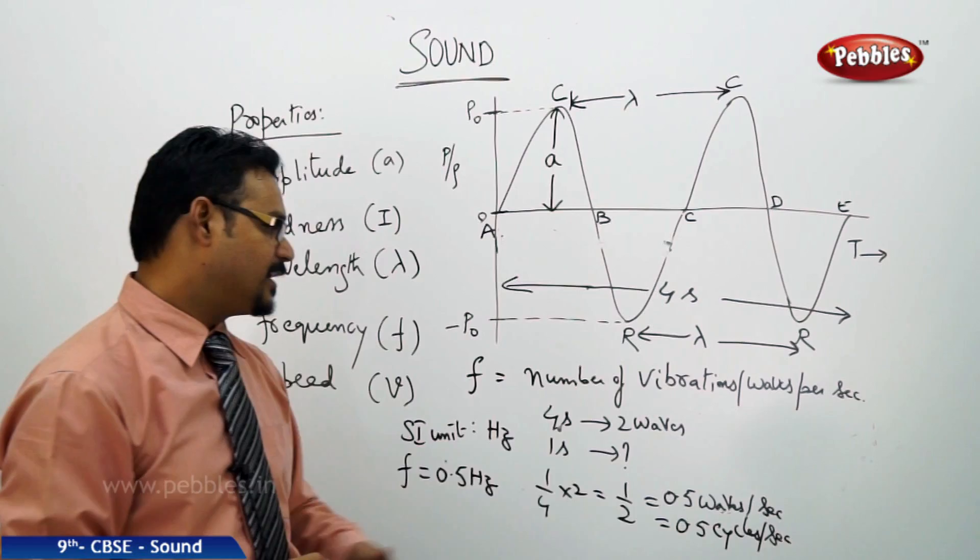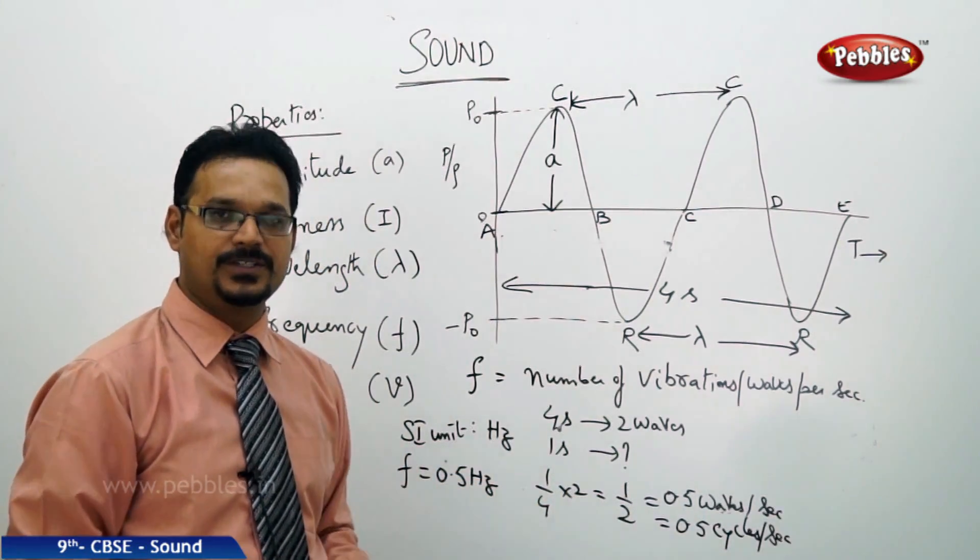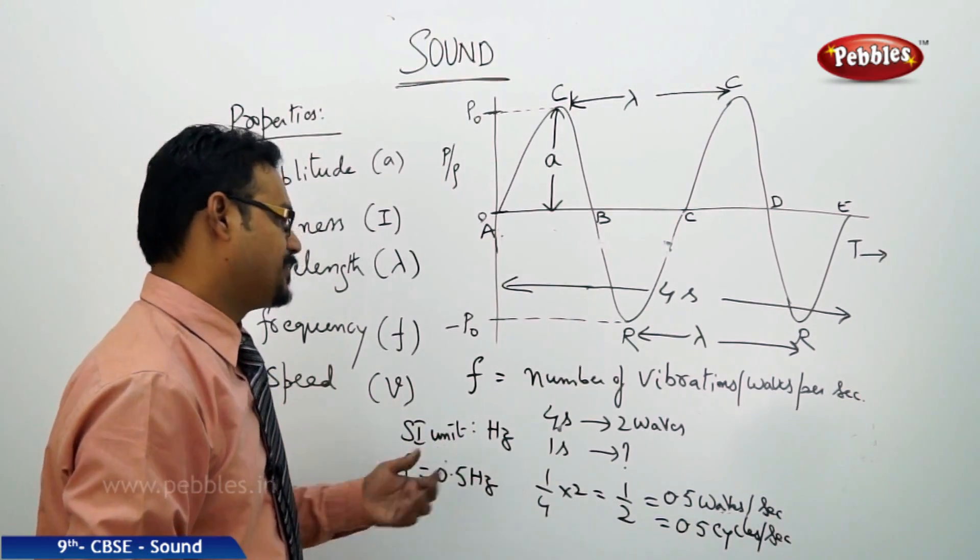Over. Instead of saying waves per second, cycles per second, I can simply say 0.5 hertz. Okay? So, this is how frequency is represented.